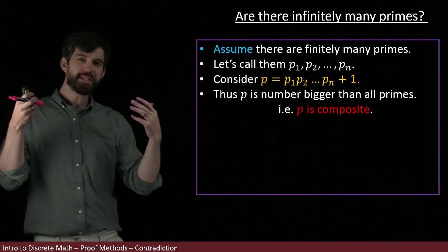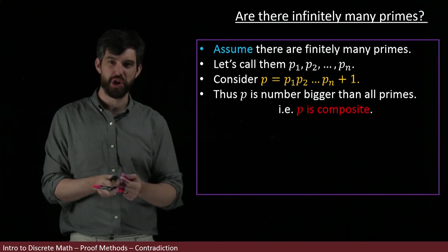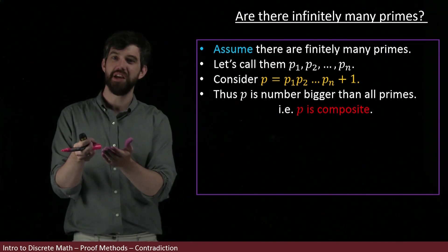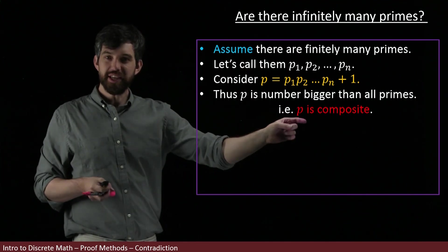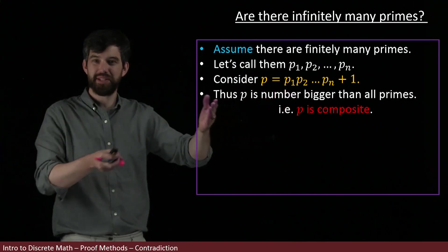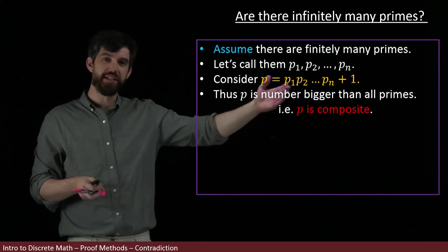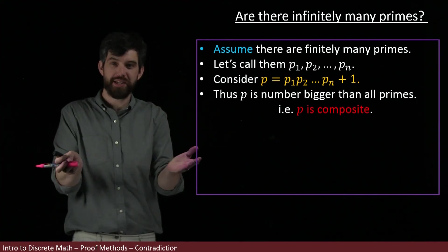Well, if it's composite, then we could factor it by that theorem we were just talking about—we could factor it as a product of different primes. This p is some product of the p₁, p₂, might be a bunch of them, but some combination of these primes. That's what it means to be composite.